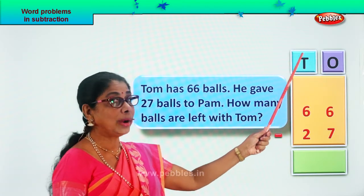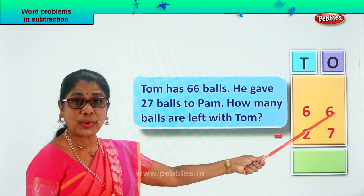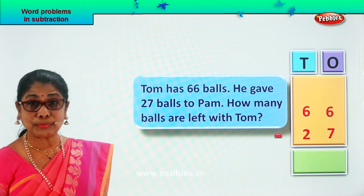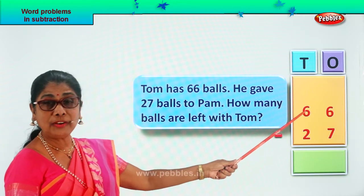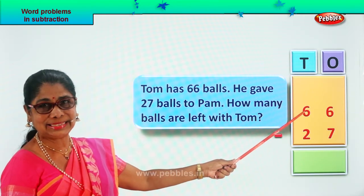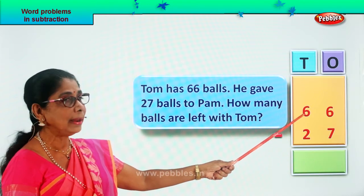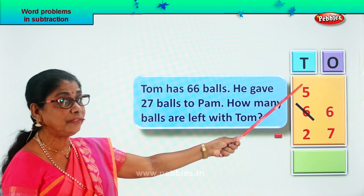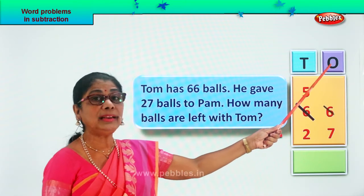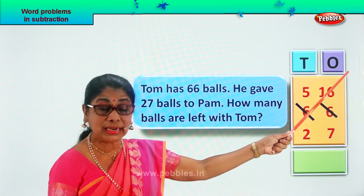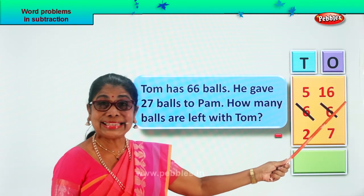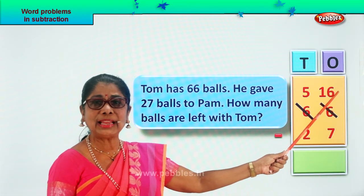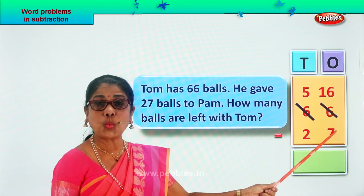The numbers are arranged in 1's and 10's order. We have 6 ones. Take away 7 ones. 6 is smaller than 7. So we borrow 1 from 6, that's 10. Minus 1 will be 5, so we write 5 here. We take 1 ten over here, that becomes 10 ones plus 6 ones — 16 ones. Now from 16 ones, we'll minus 7 ones.